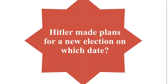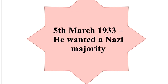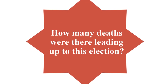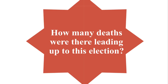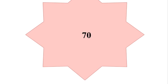Hitler made plans for a new election on which date? The 5th of March 1933. He wanted a Nazi majority. How many deaths were there leading up to this election? 70.